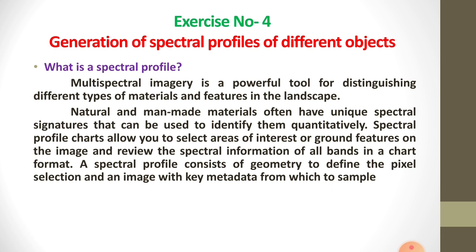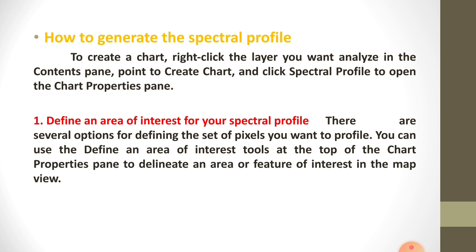Next, see how to generate the spectral profile. The spectral profile creates a chart. By using the spectral profile, you create the chart using different software: right-click the layer you want to analyze in the content pane, point to 'Create a Chart,' and click 'Spectral Profile' to open the chart properties pane. To define the parameter settings for your chart, click the data tab at the top of the chart properties pane.